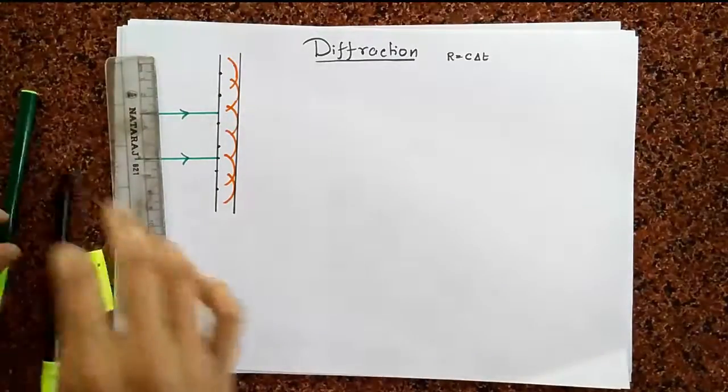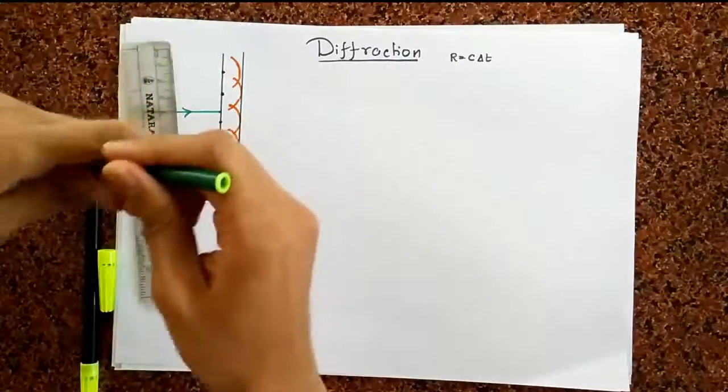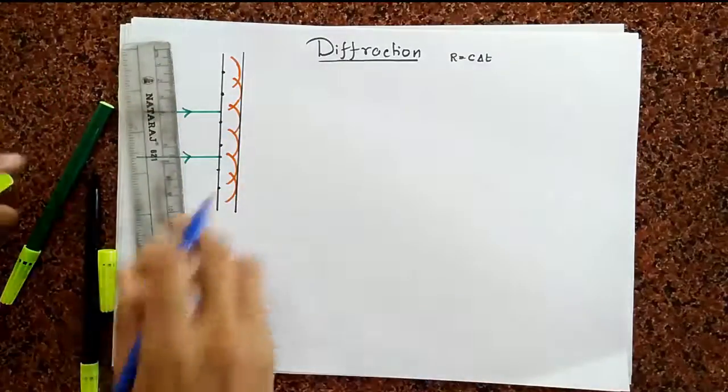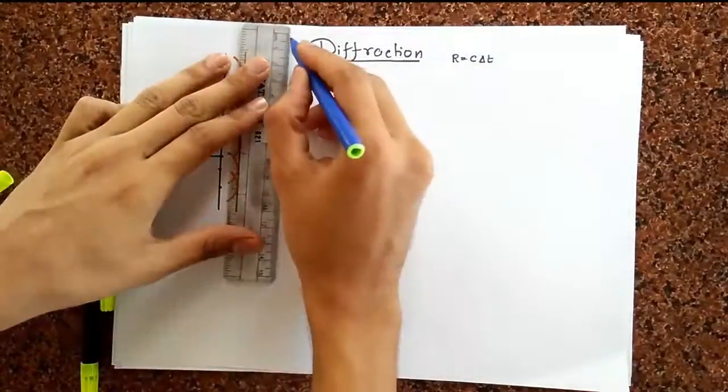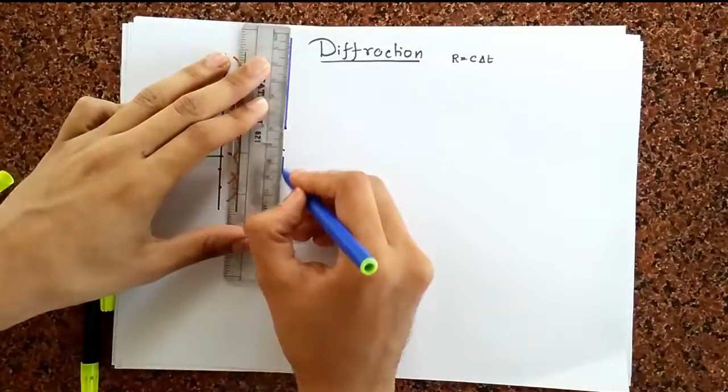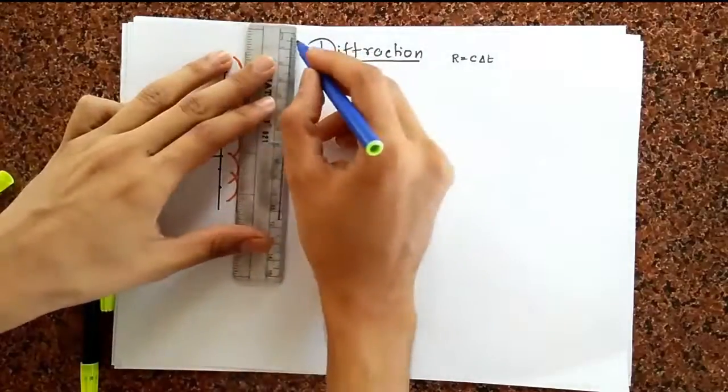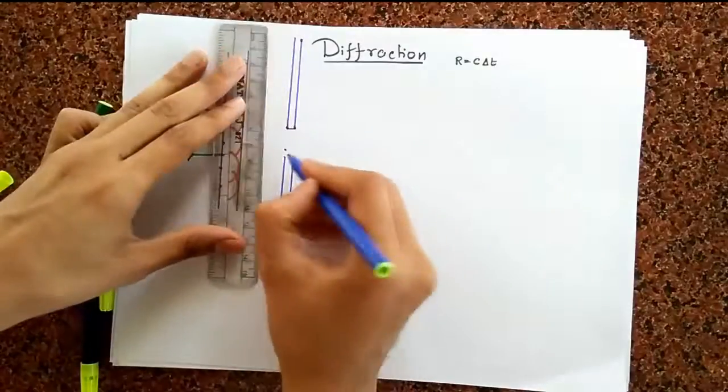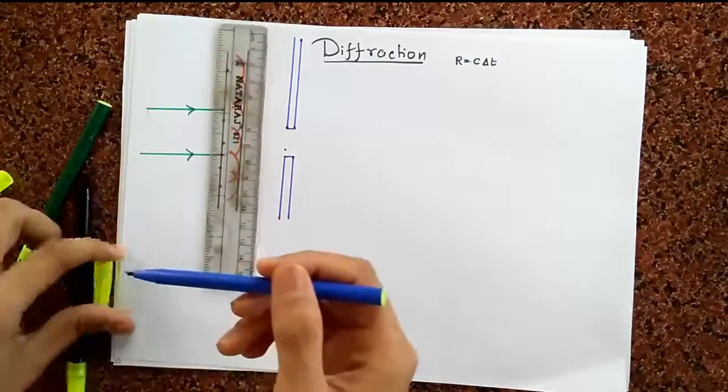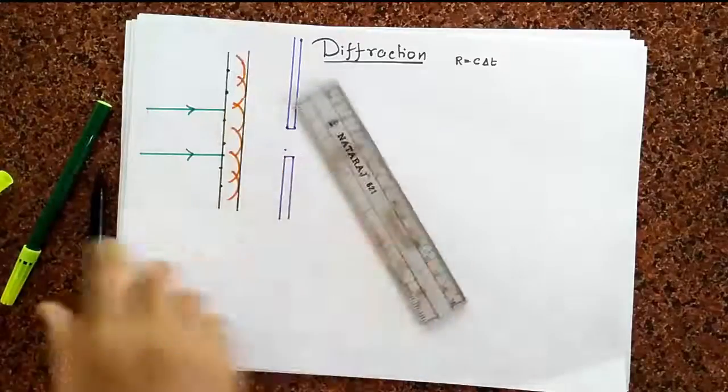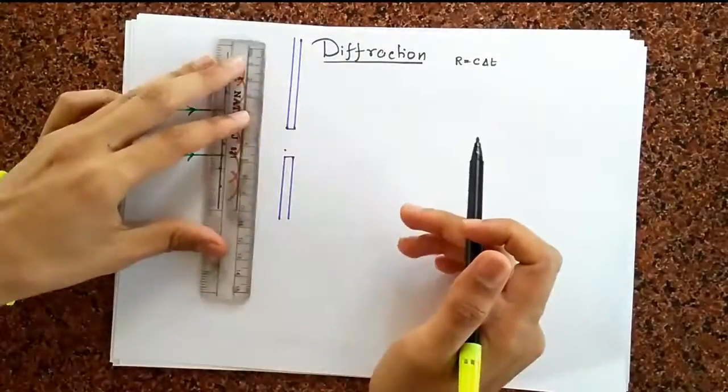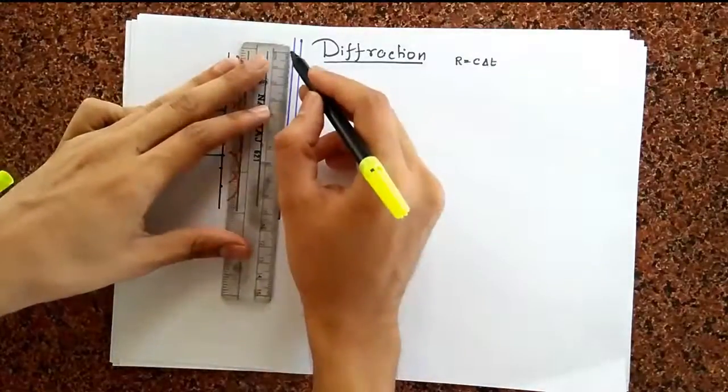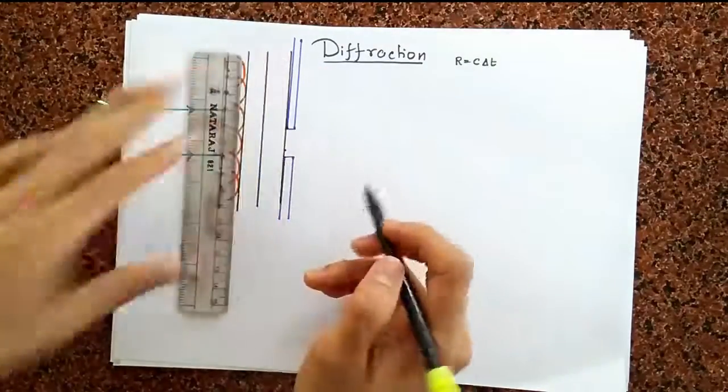But now what happens when we encounter an obstacle? Suppose we encounter a slit. So let me draw a slit somewhere. Alright, let's say here is a slit. Now the question is what's going to happen? Well, until the wave hits the slit, same thing is going to happen. So I will have continuing parallel wave fronts, which I'm not going to keep on doing the protractor thing again and again. It's just going to come and hit the parallel wave fronts until it hits the source.